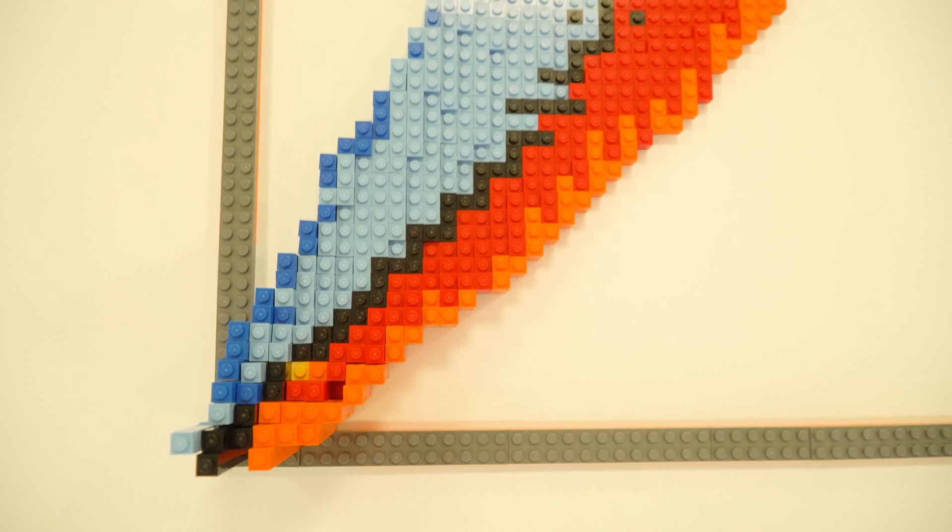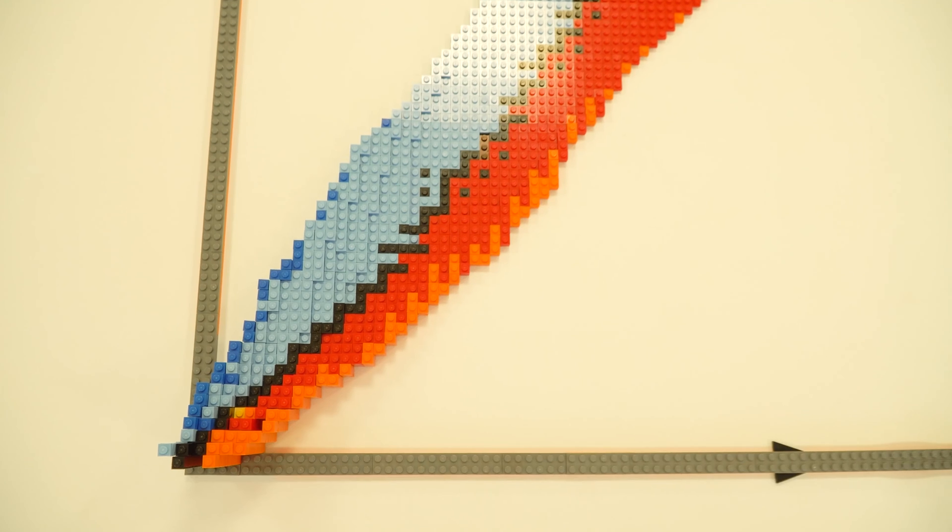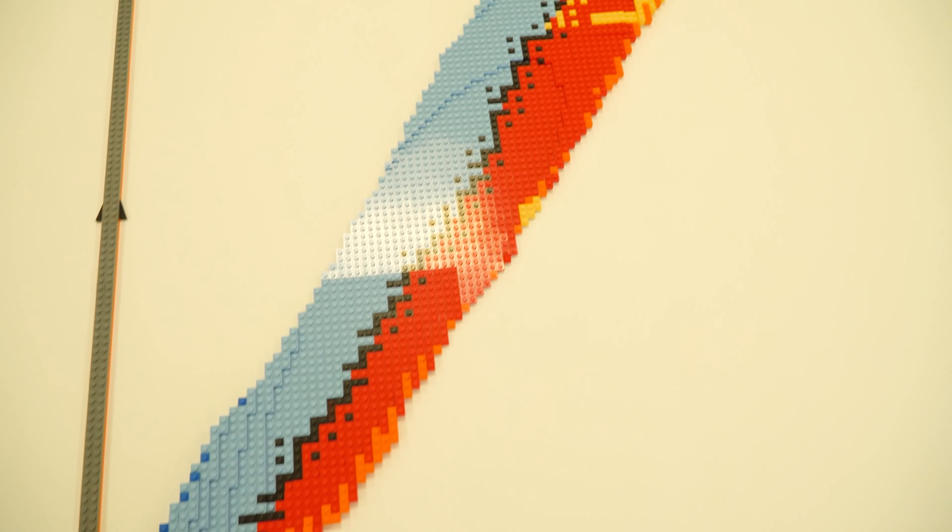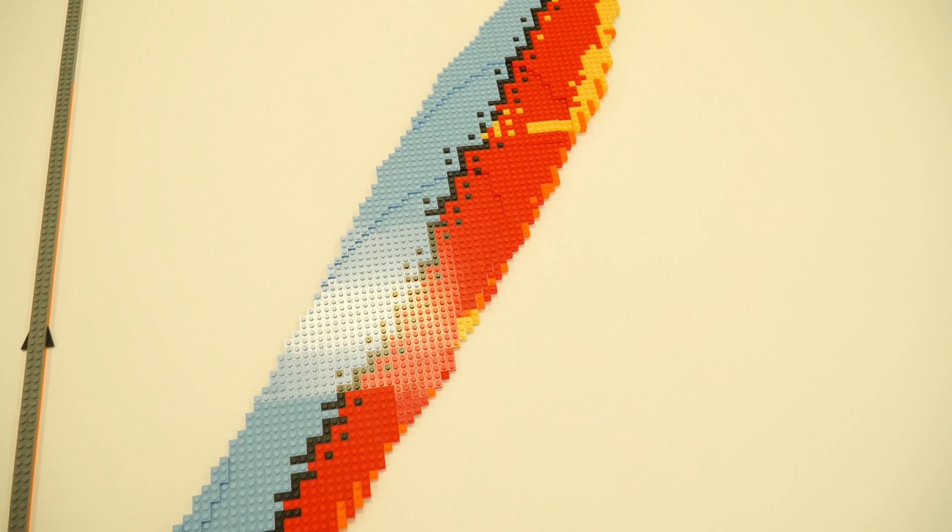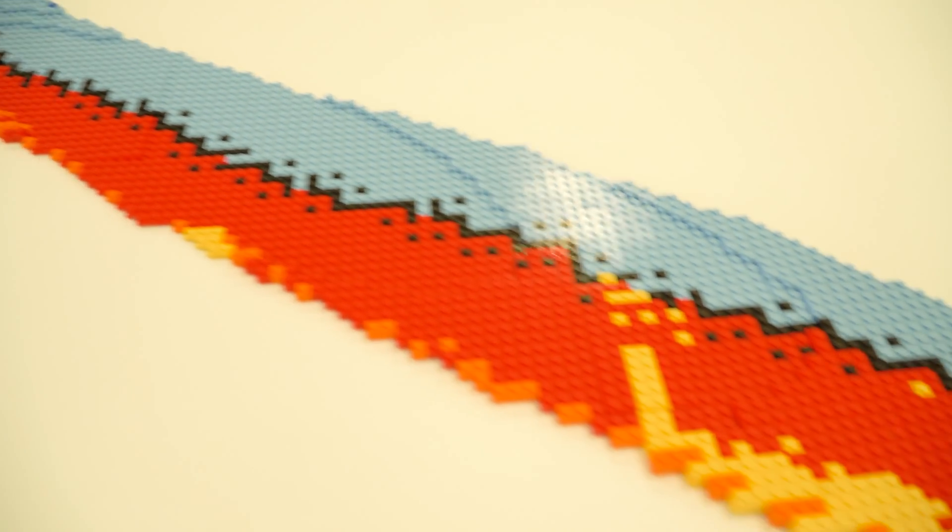Now we can also look at this nuclear chart in LEGO where again across the bottom we have the number of protons and up the side the number of neutrons. In black are the stable isotopes, but then we have different colors that represent different sorts of unstable isotopes. And the color really represents the type of radioactive decay they undergo, perhaps it's alpha, perhaps it's beta, or occasionally even spontaneous fission.